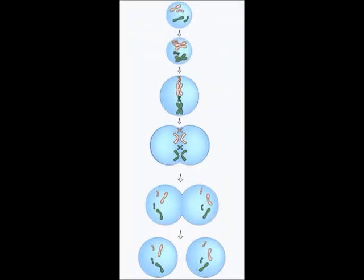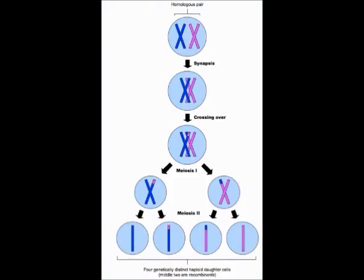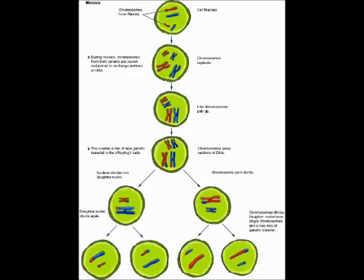Two daughter cells are made from mitosis. Four daughter cells are made from meiosis. The diploid number is 46. The haploid number is 23.